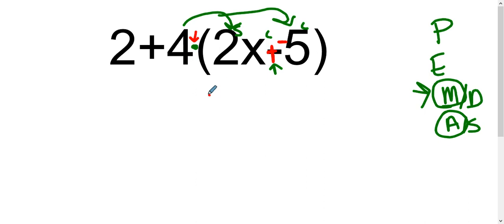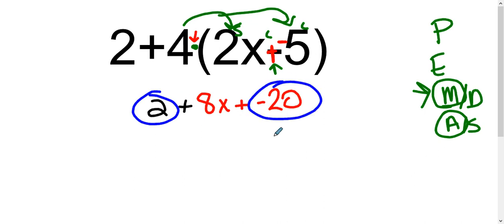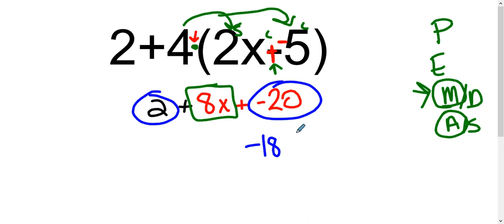Distributing — which is multiplying — so 4 times 2x is 8x, and 4 times a negative 5 is negative 20. Then I need to bring down what was in front. This 8x is a positive and I have a 2 out front. Now think about what your like terms are: the like terms are 2 and negative 20 — combine those and you get negative 18. I have a positive 8x left. In standard form, variables go in front of constants, so my final answer is 8x minus 18.